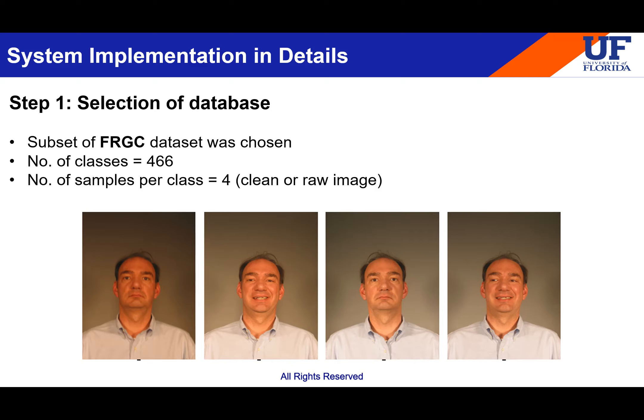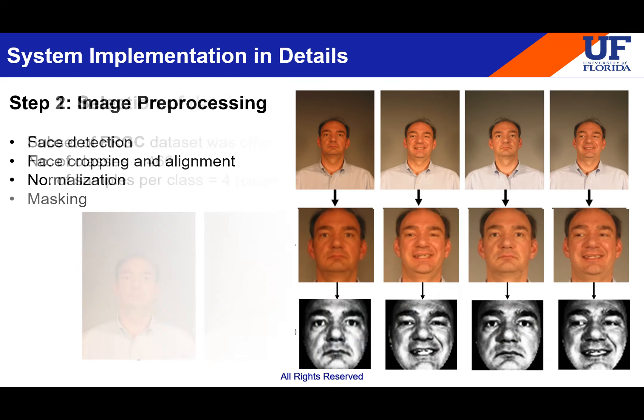The first step is selecting a database. I chose a subset of the FRGC dataset because it is publicly available and it's good to have multiple raw digital images for training. In this dataset, there were at least 466 people who each had four clean raw digital images. So the number of classes is 466 and the number of raw digital samples per class is 4. The next step is image processing.